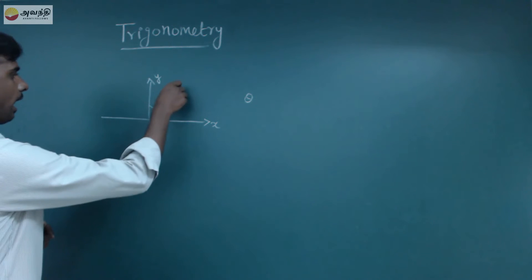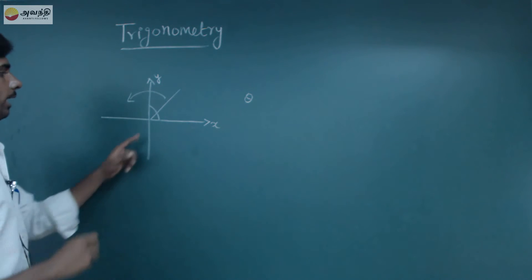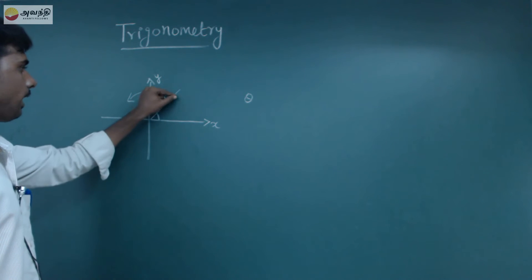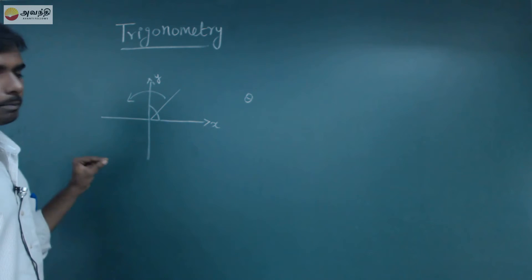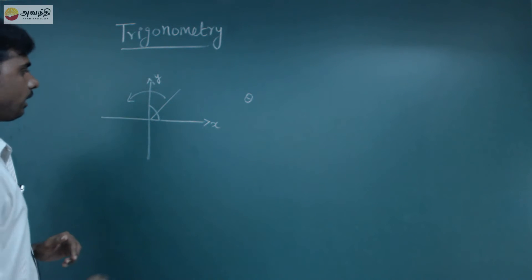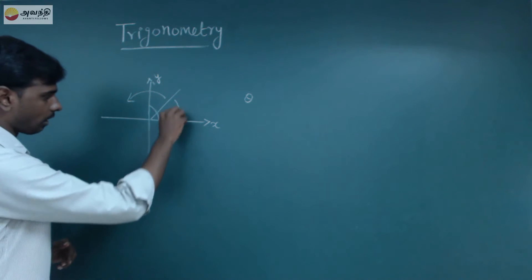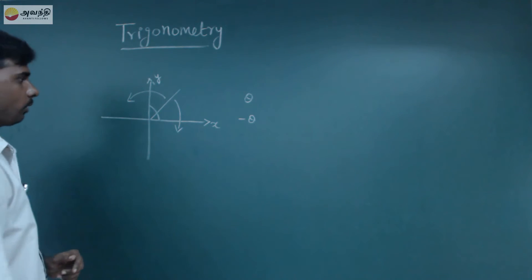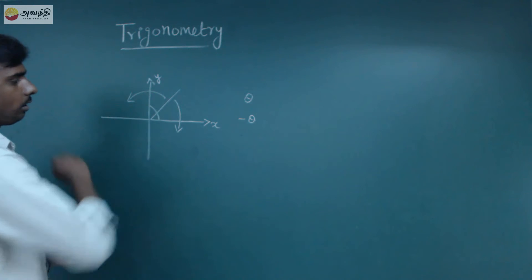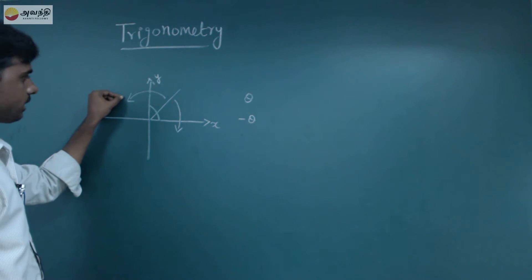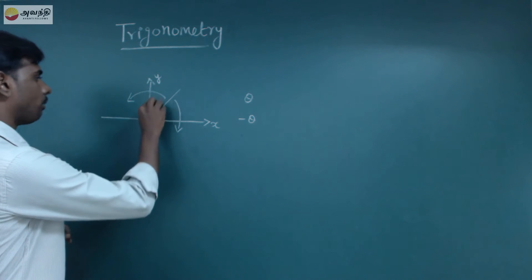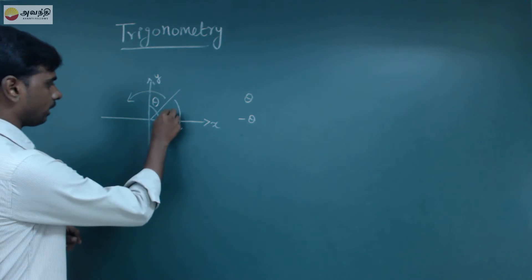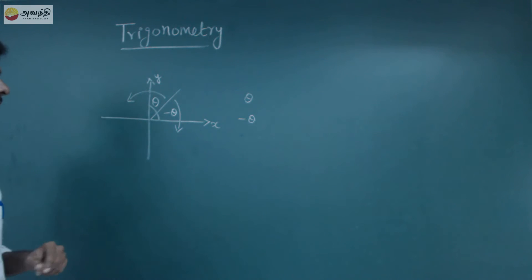A positive angle means, in the anti-clockwise direction, there is a line passing through the origin. If we rotate the angle in the clockwise direction, that is the clockwise direction, and the angle means a negative angle. So, a line in the anti-clockwise direction gives a positive angle, and if we rotate the line in the clockwise direction, we get a negative angle.